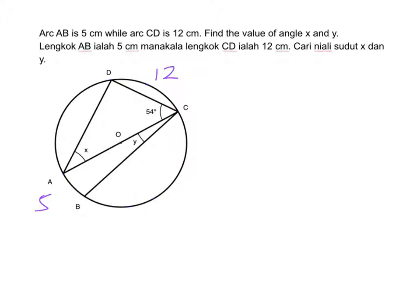Now note that this is diameter. We want to find X. The angle subtended by the diameter at this circumference here is 90 degrees. Then we can find X. So X is 180 minus 90 minus 54, and we get 36 degrees.